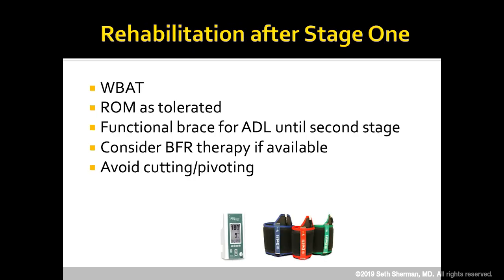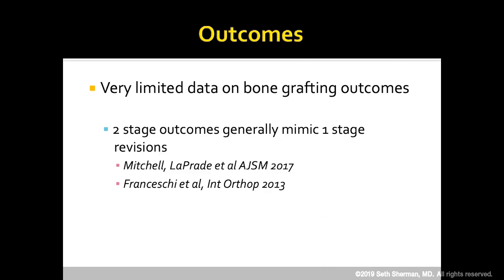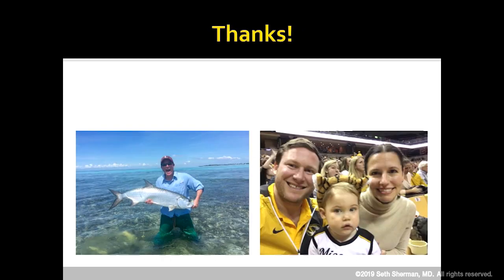For rehab, patients can weight-bear and range the knee with functional bracing, but are not returning to contact or cutting sports between stages. At our institution, we use blood flow restriction therapy early when they're relatively immobile so we don't lose as much muscle tone. Unfortunately, there's limited data on bone grafting outcomes, but two-stage outcomes generally mimic one-stage revisions. Thank you for your attention.